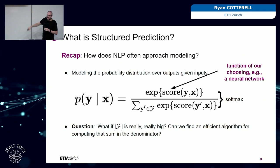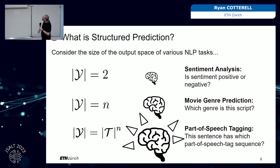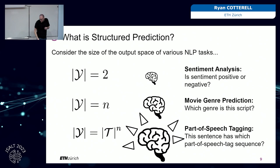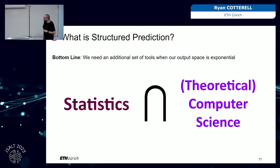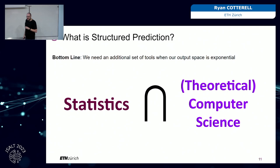The problem we care about in structured prediction is: what if the number of elements in Y is really big — so big that you cannot just run a for loop? In my example: sentiment analysis has two classes, movie genre prediction is a few more, but part-of-speech tagging — if I want to assign a part of speech to every word in a sentence, and I have T parts of speech and a sentence of length N, I have T to the N different taggings. The bottom line is: NLP is the intersection of statistics and theoretical computer science.